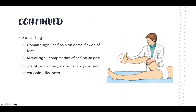Special signs include Homan's sign — dorsiflexing the foot causes pain in the calf. Mayer's sign involves compression of the calf causing pain. There is controversy around Homan's sign, as some suggest it may dislodge a clot into the systemic circulation, though some studies indicate this is unlikely. It should be used with caution.